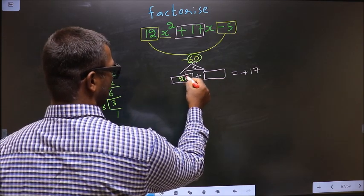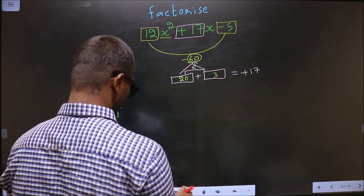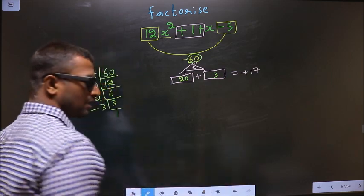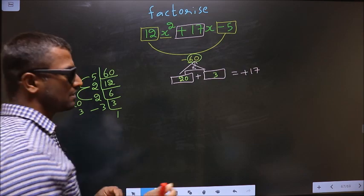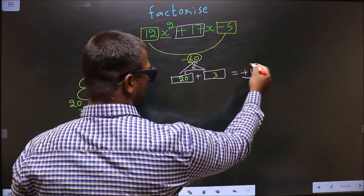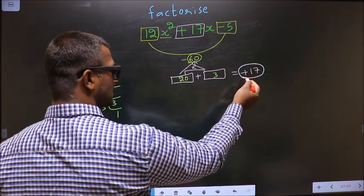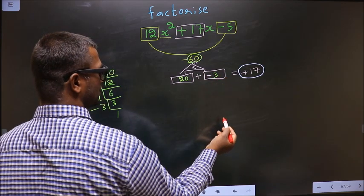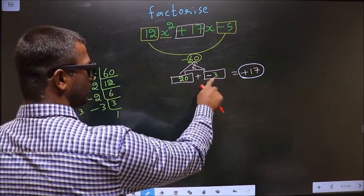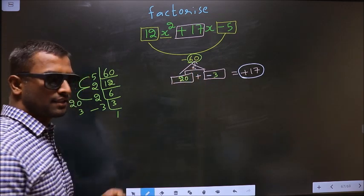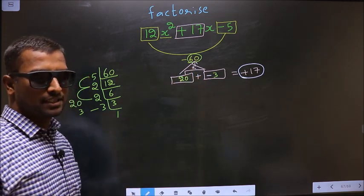So here you write 20 and here you write 3. Now you should adjust the signs. What I mean is here you should get plus 17. To get plus 17 you should put negative before 3. 20 minus 3 is plus 17. 20 into minus 3 is minus 60. Now we have adjusted the signs.